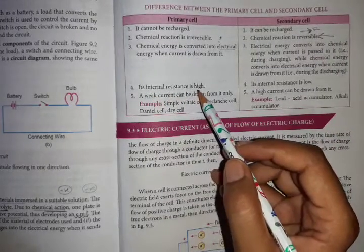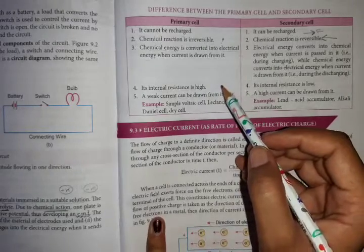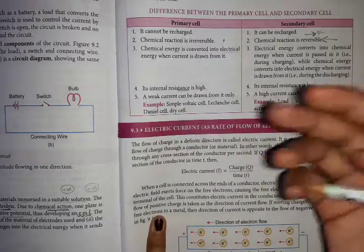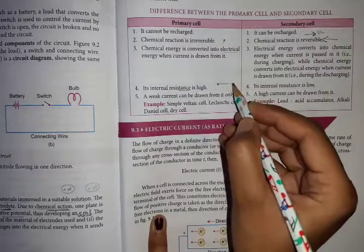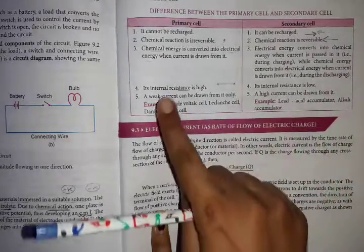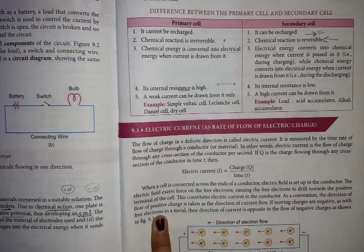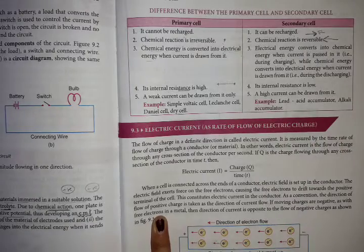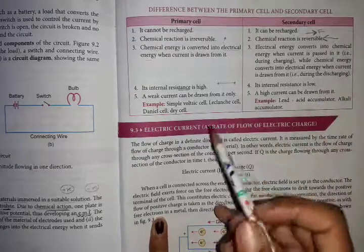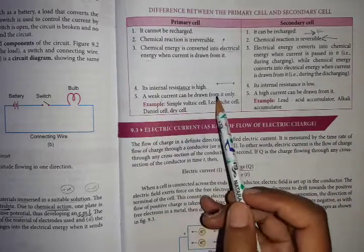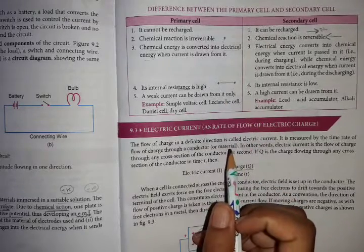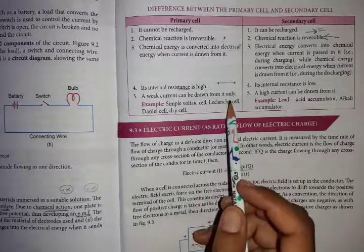The internal resistance of a primary cell is high. Resistance means anything which reduces current flow. The internal resistance of a secondary cell is low, so more current can be drawn from it. Primary cells are suited for low-current applications.